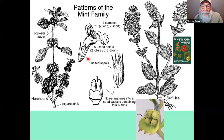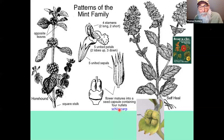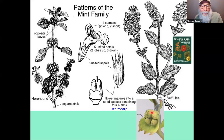The technical name for the fruit in the mints is a schizocarp. The calyx persists in the mints and is often a very important part of how the nutlets are dispersed — the persistent calyx sometimes even covers those nutlets.